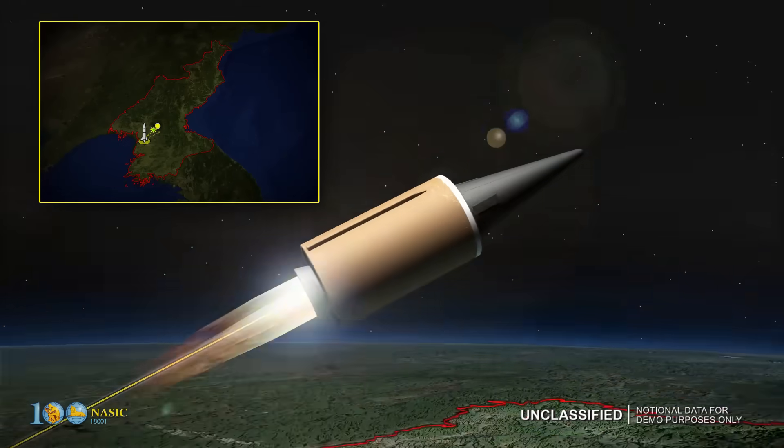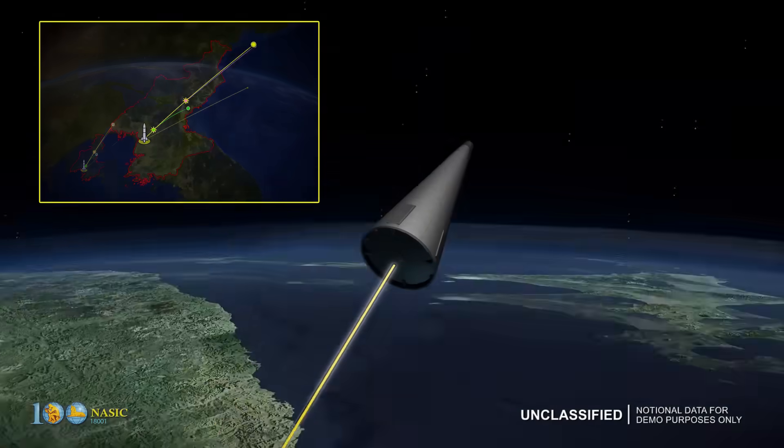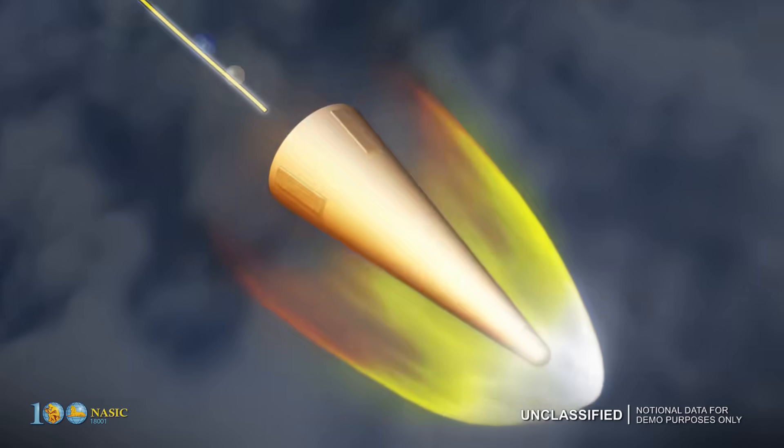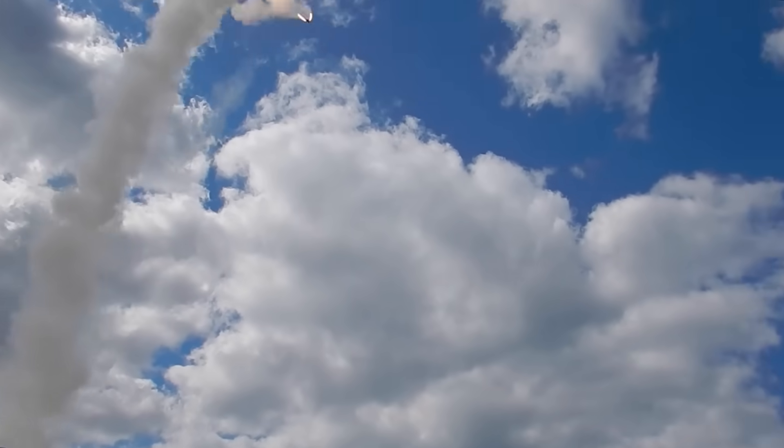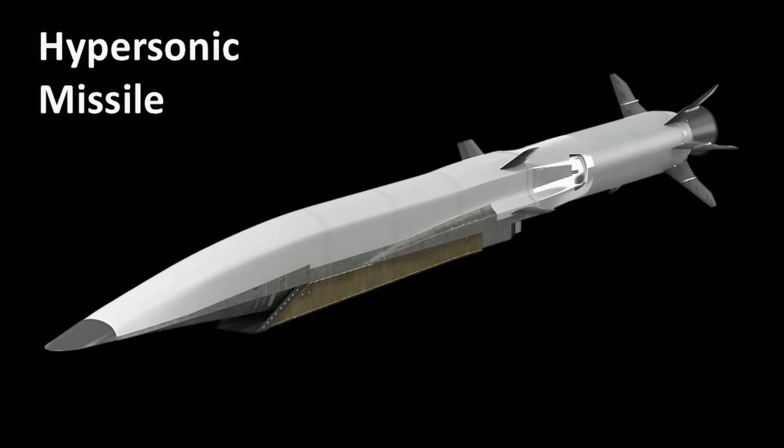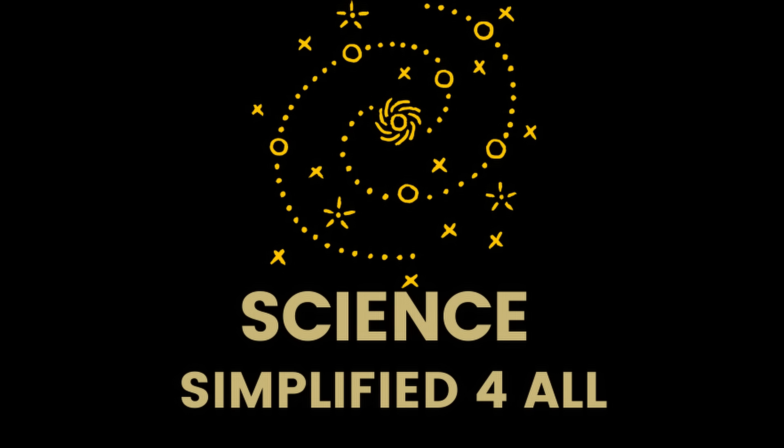Ballistic missiles typically have a much longer range than cruise missiles. But how can a ballistic missile travel such a long distance without continuous propulsion? What is the real difference between a ballistic missile and a cruise missile? And what exactly is a hypersonic missile? Let's explore all of this in the video. Hi friends, welcome to a new episode of Science Simplified for All.